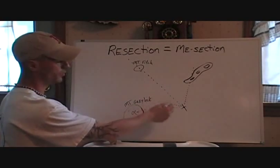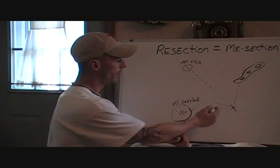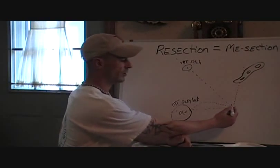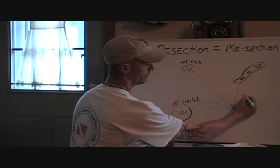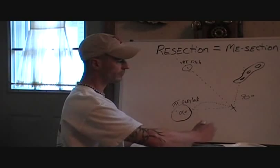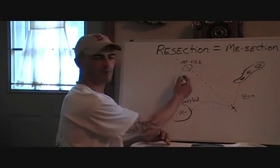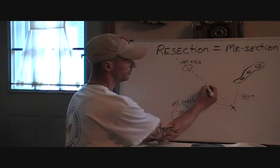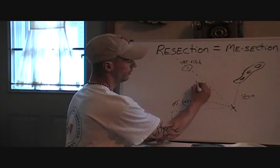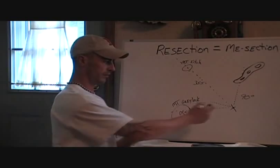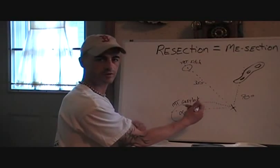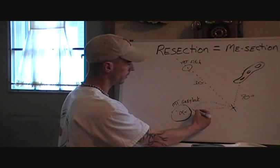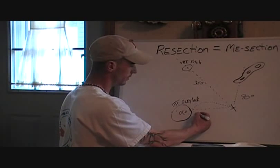Now I have three reference points. We shot our azimuth — our azimuth to this ridgeline was 90 degrees. Our azimuth to Mount Fitch was 355. Then our azimuth back to Mount Greylock — again, if we can use three, we're just helping ourselves out that much more — we'll say that was 260. The numbers don't have to be right; this is just a demonstration.